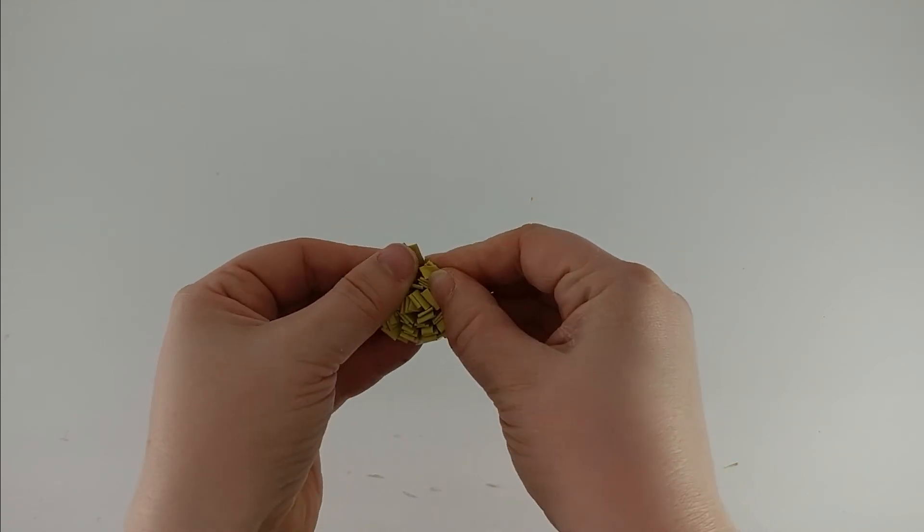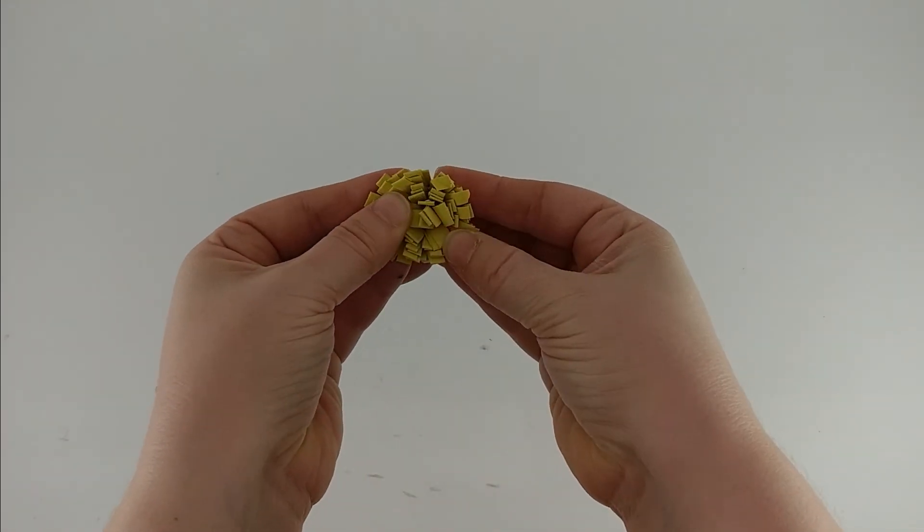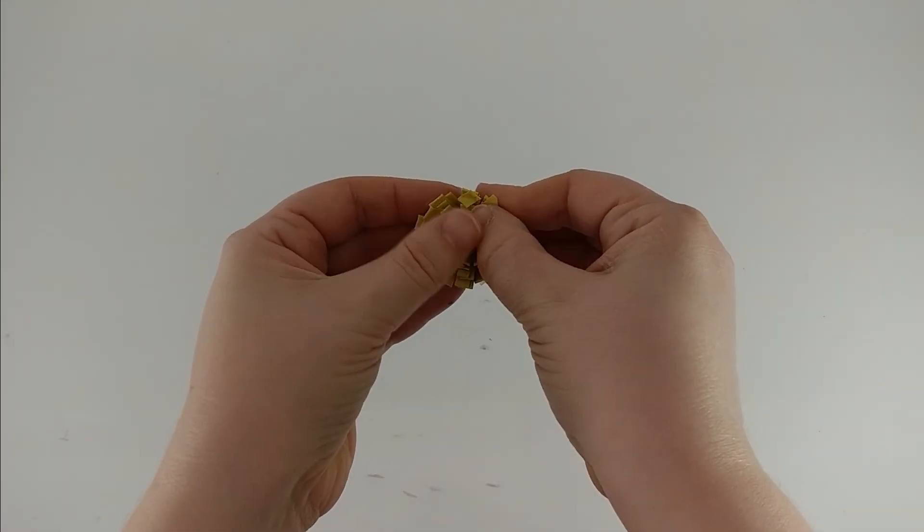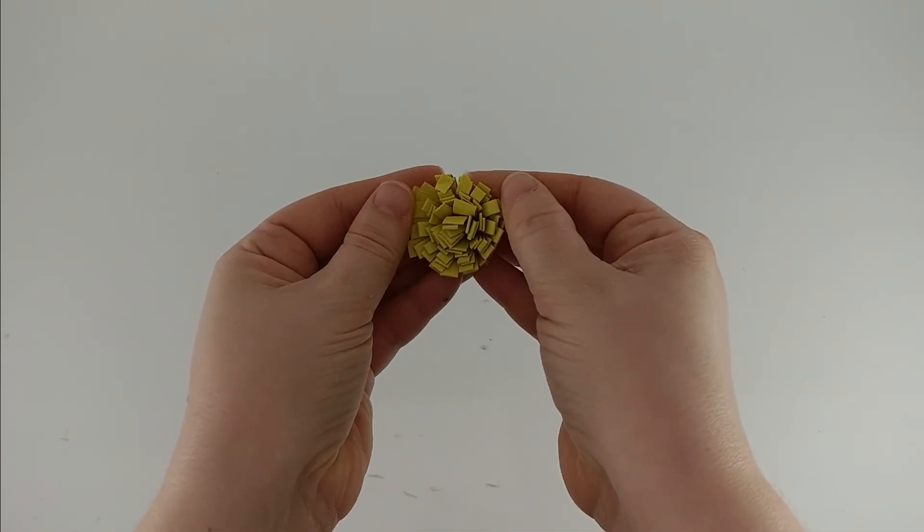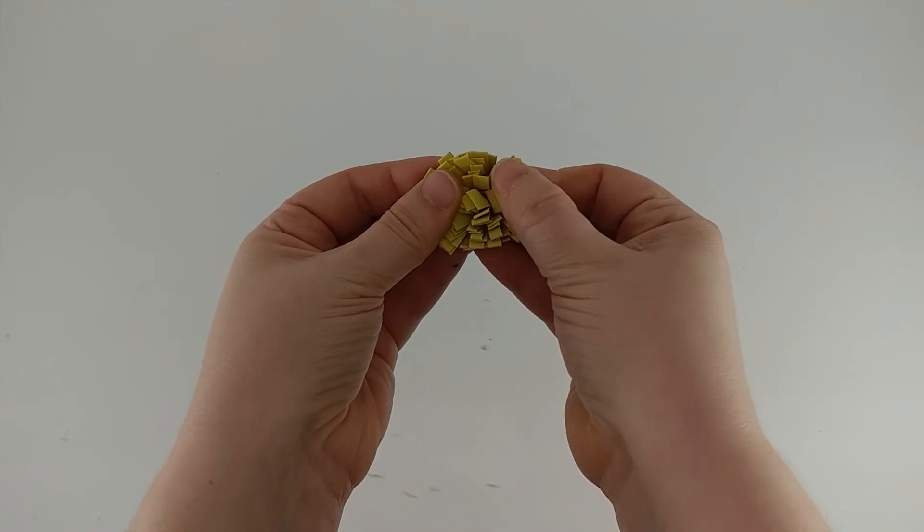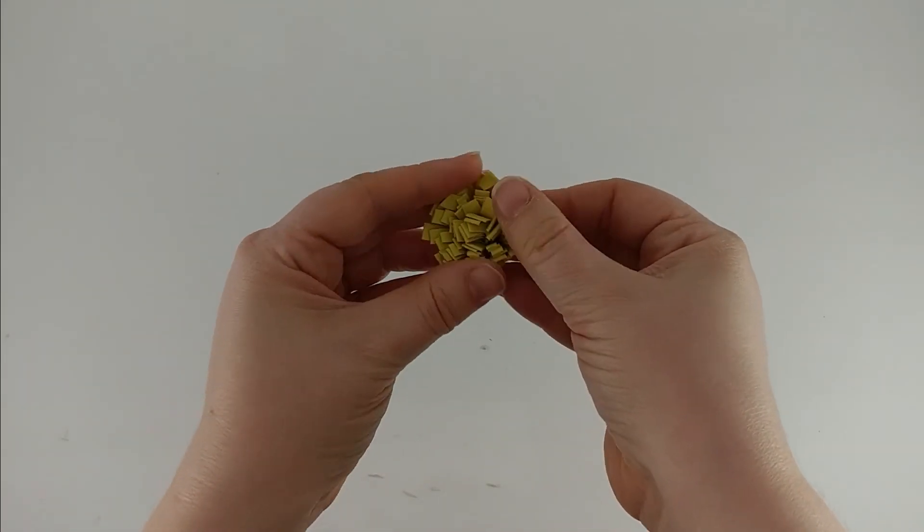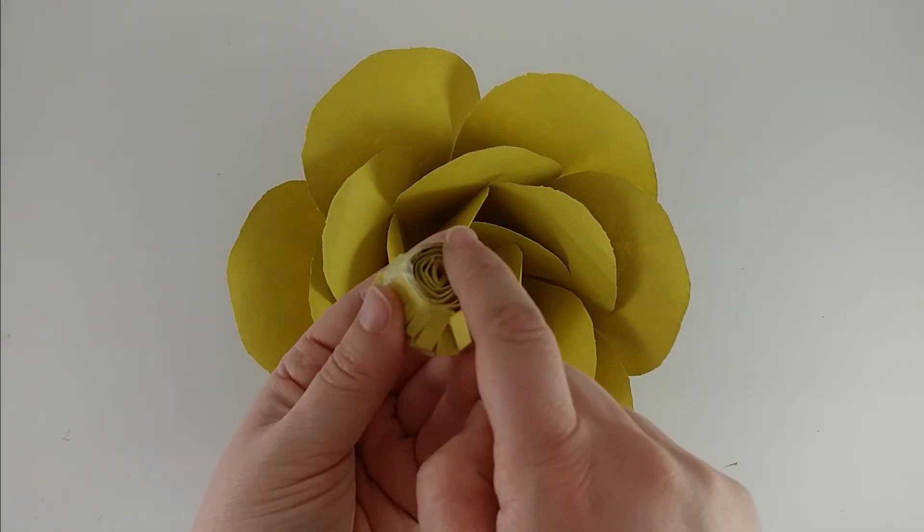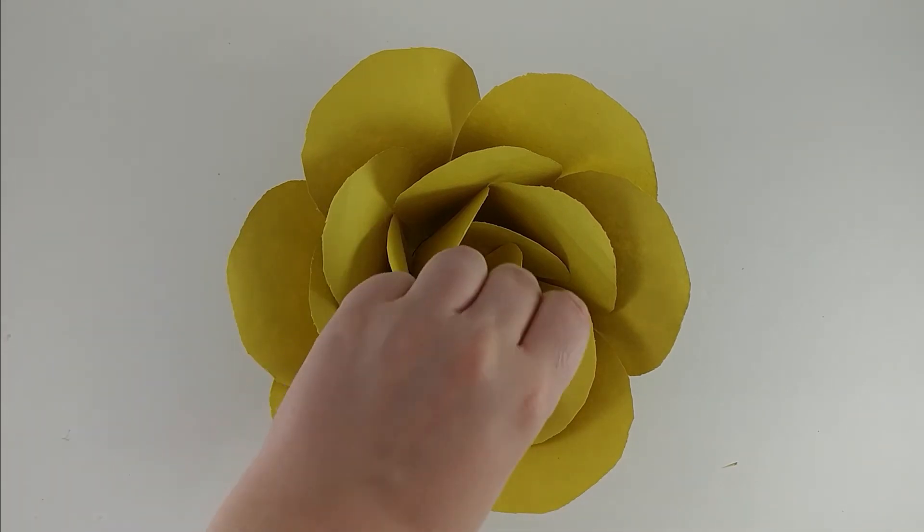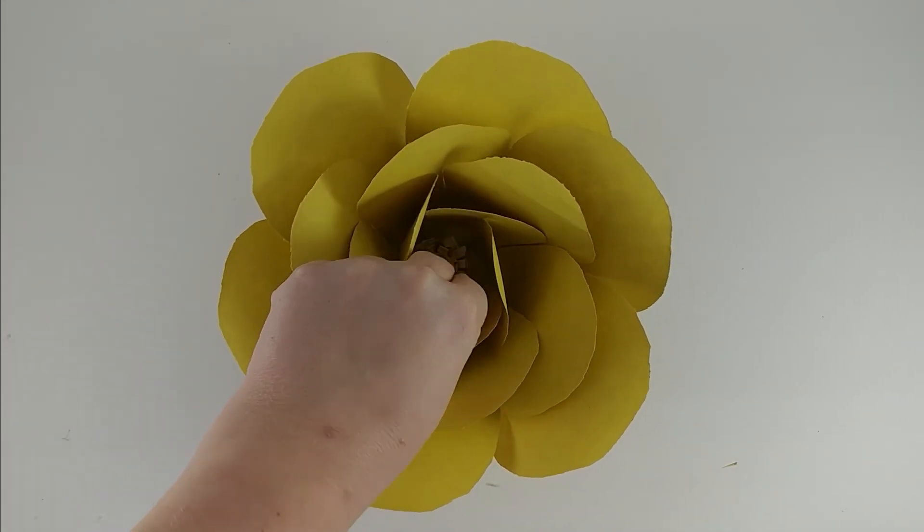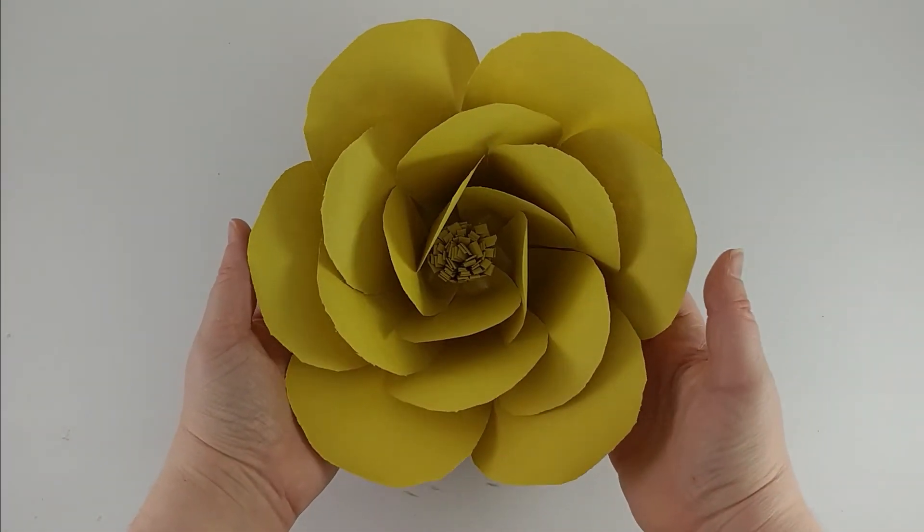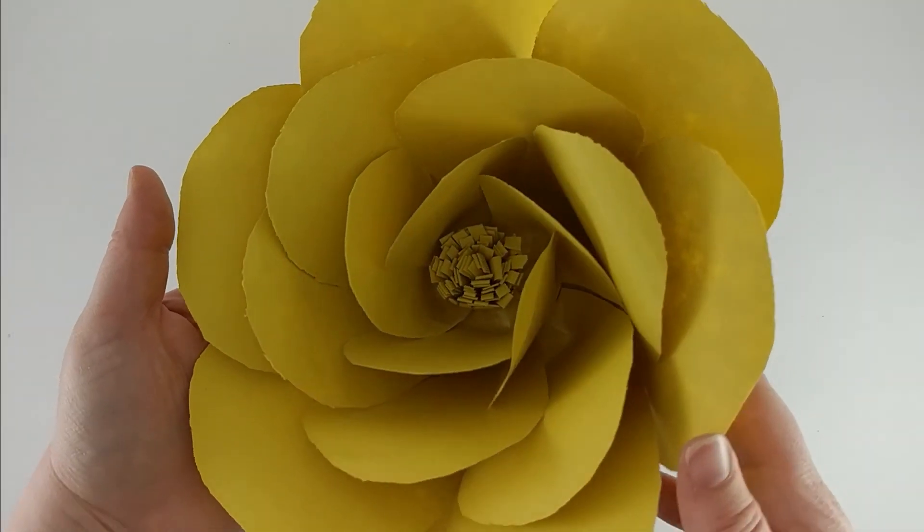Now I'm going to fluff it. I'm just digging my thumbs in and pulling out to the side to spread it out a little bit. And then all I have to do is a little glue and pop it straight into the middle of my flower. And now my paper rose is complete.